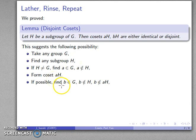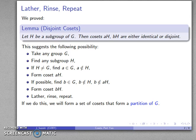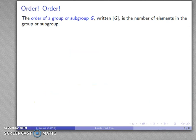I might be able to find another element that's in neither, and this allows me to form another coset. I'll lather, rinse, repeat. Eventually every element of G is going to end up in one of the cosets, and because cosets are disjoint, every element will end up in exactly one coset. This gives me a partition of my group.